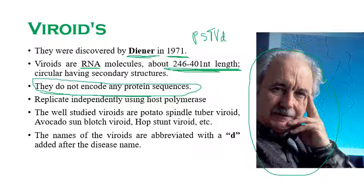A key difference: viruses contain a protein coat and nucleic acid, whereas viroids do not contain a protein coat — they are devoid of a protein coat. That is why viroids are the example of pathogens devoid of protein coat. Viroids only contain nucleic acid. They replicate independently using the host's RNA polymerase enzyme.